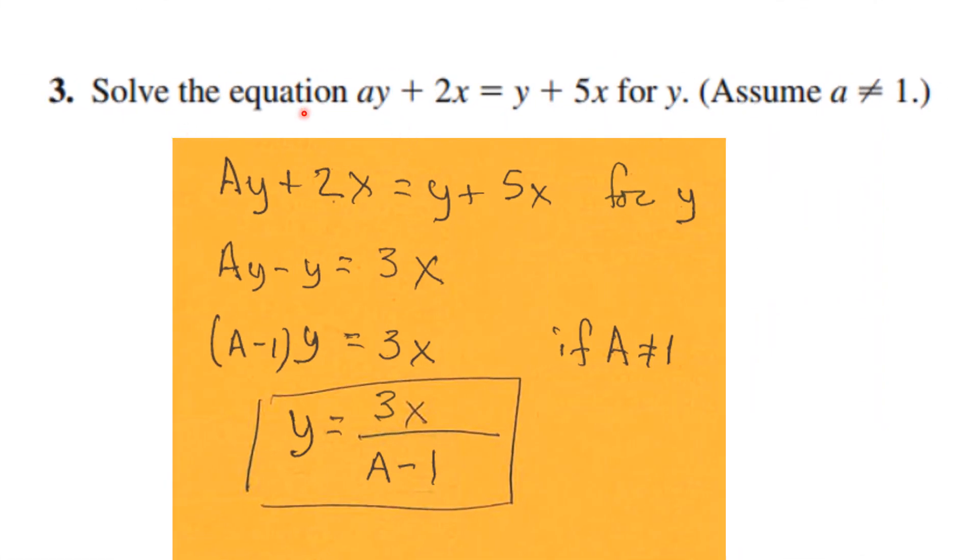Number three, we're supposed to solve this equation for y. There's a bunch of variables, so we're treating everything like a number except for y. We'll move this y to the other side and move this x to that side, so we have ay minus y equals 3x. We factor the y out, giving us a minus 1, and since a is not equal to 1, we can divide by it. We get that y equals 3x over a minus 1.